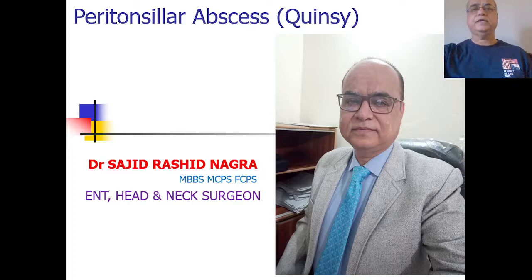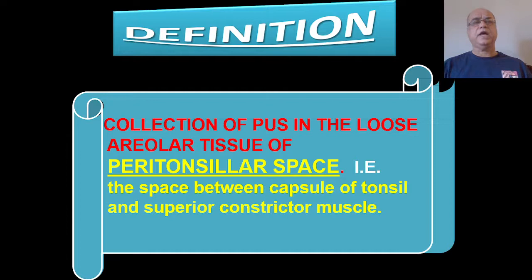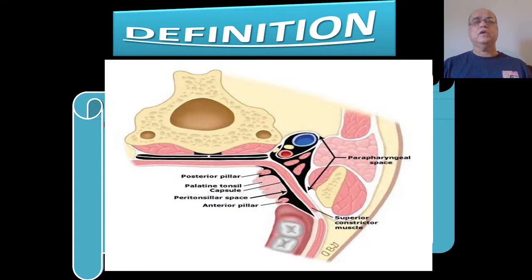The topic today is about what we call as peritonsillar abscess, or quincy. These two terms are synonymously used. This is nothing but a collection of pus in the loose areolar tissue of the peritonsillar space, which is the space between the capsule of the tonsil and the superior constrictor muscle.